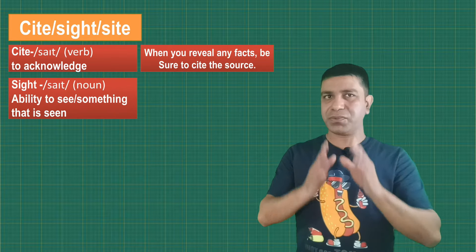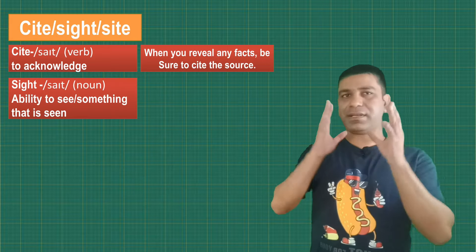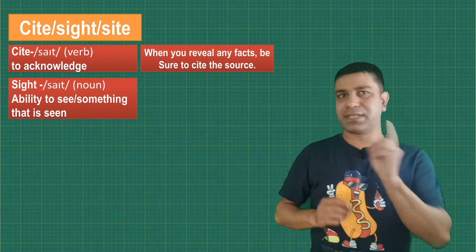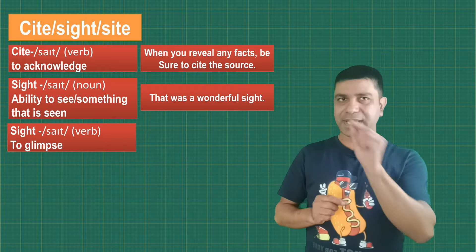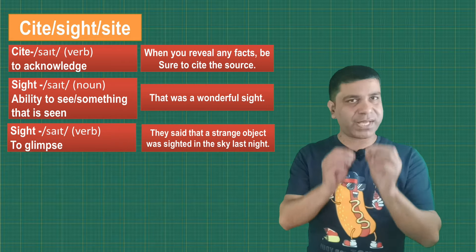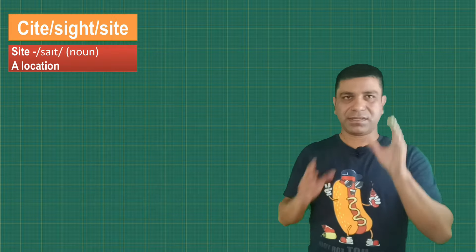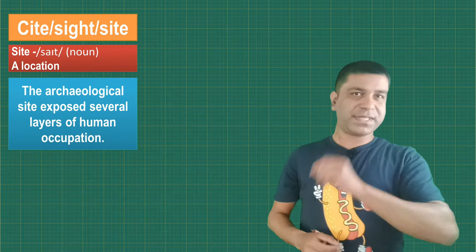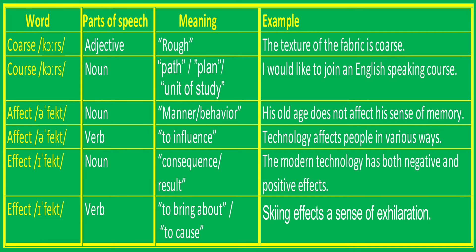Sight (S-I-G-H-T) can be used both as a noun and a verb. As a noun, sight means the ability to see or something that is seen — for example, 'That was a wonderful sight.' As a verb, sight means to glimpse — for example, 'They said that a strange object was sighted in the sky last night.' Site (S-I-T-E) means a location — for example, 'The archaeological site exposed several layers of human occupation.' These are some more examples of homonyms. You can take a screenshot for your better understanding.